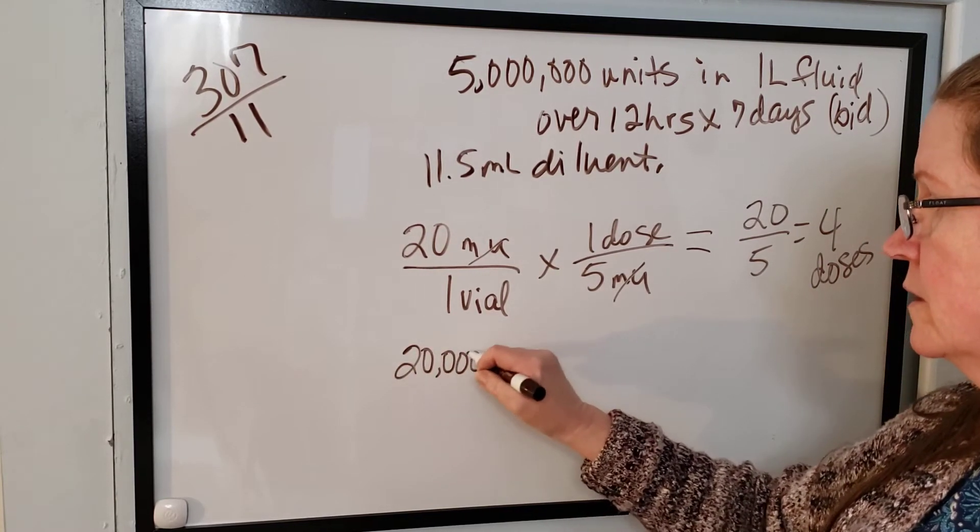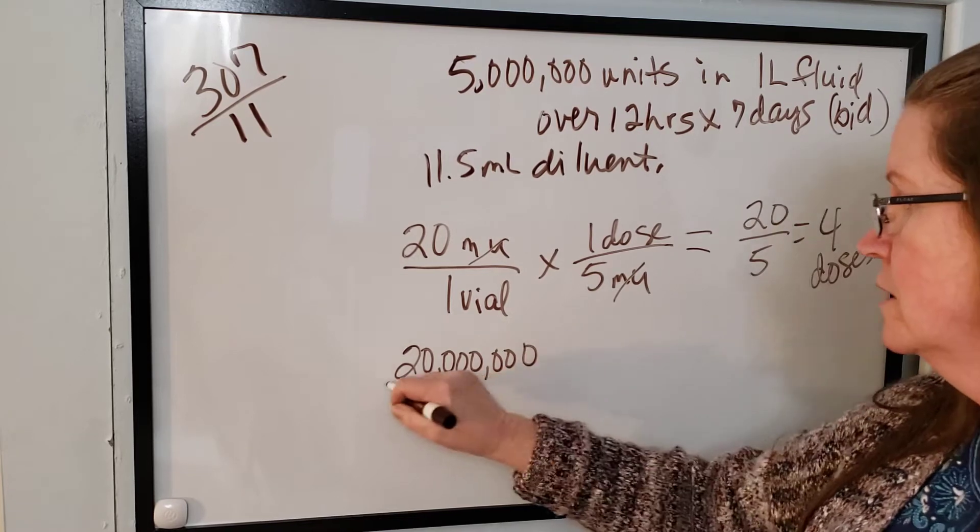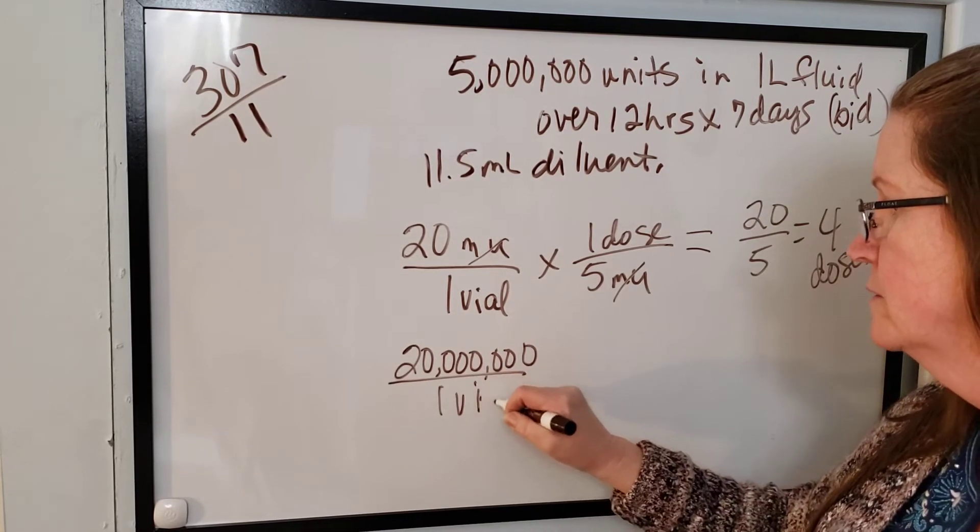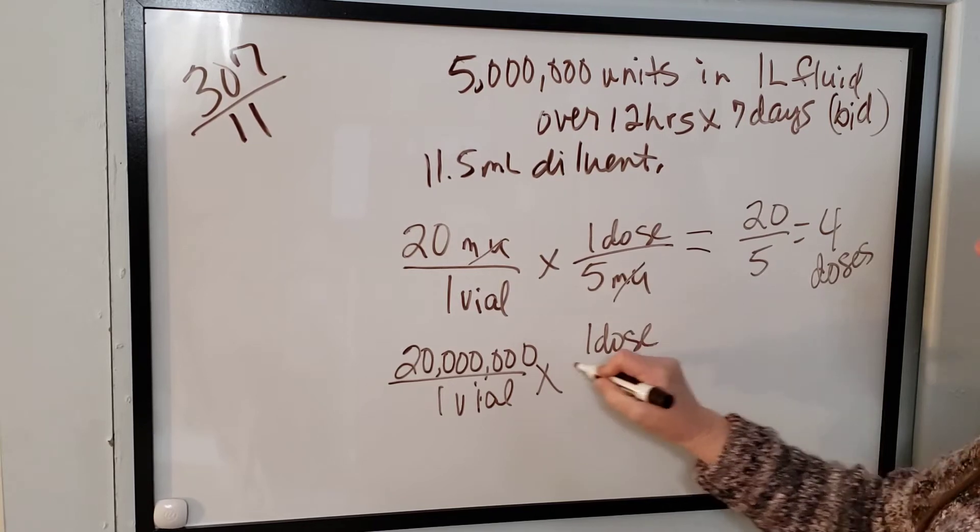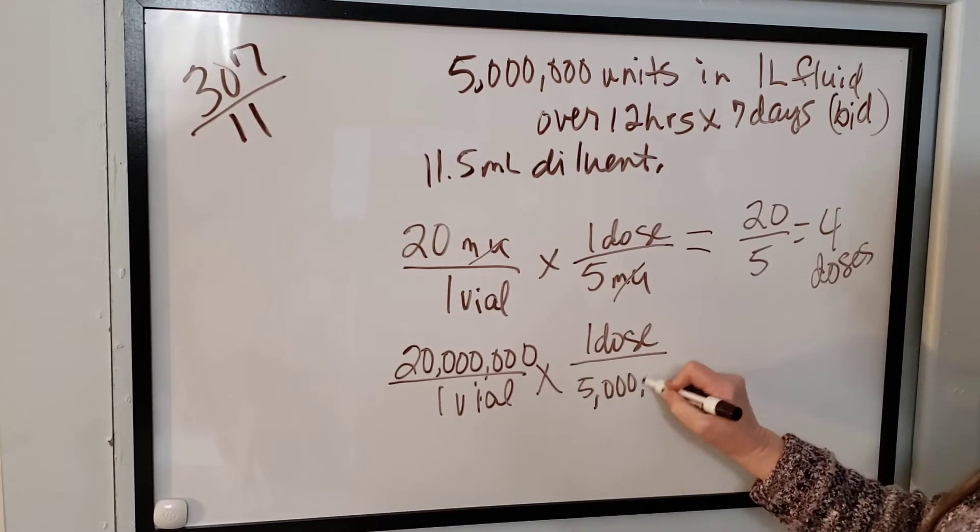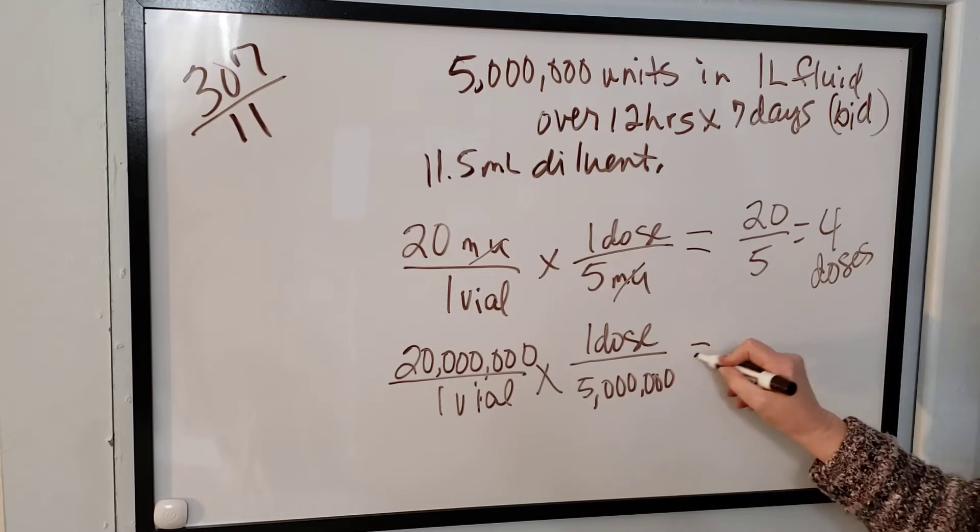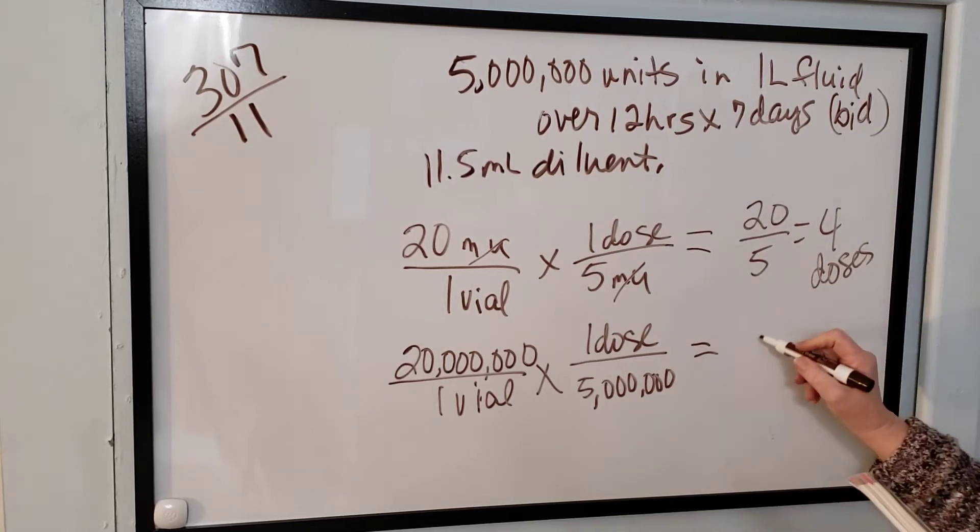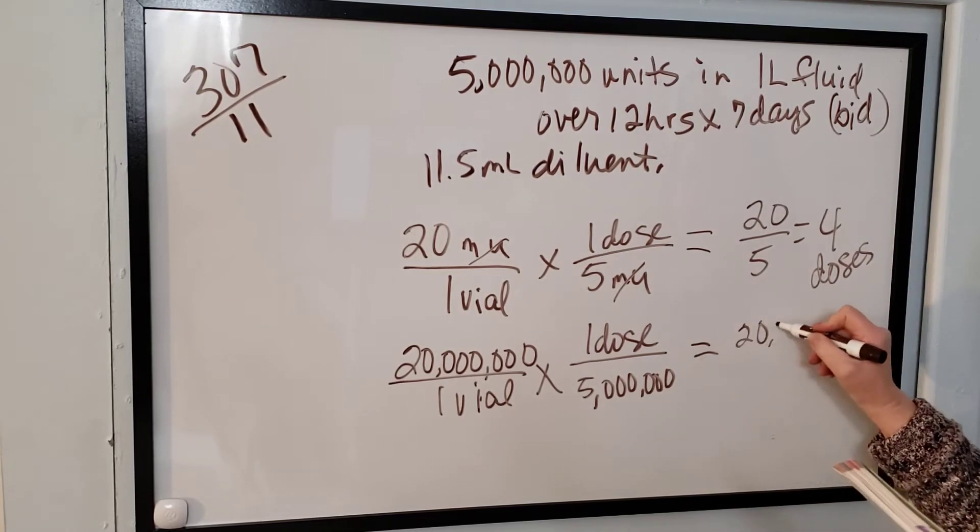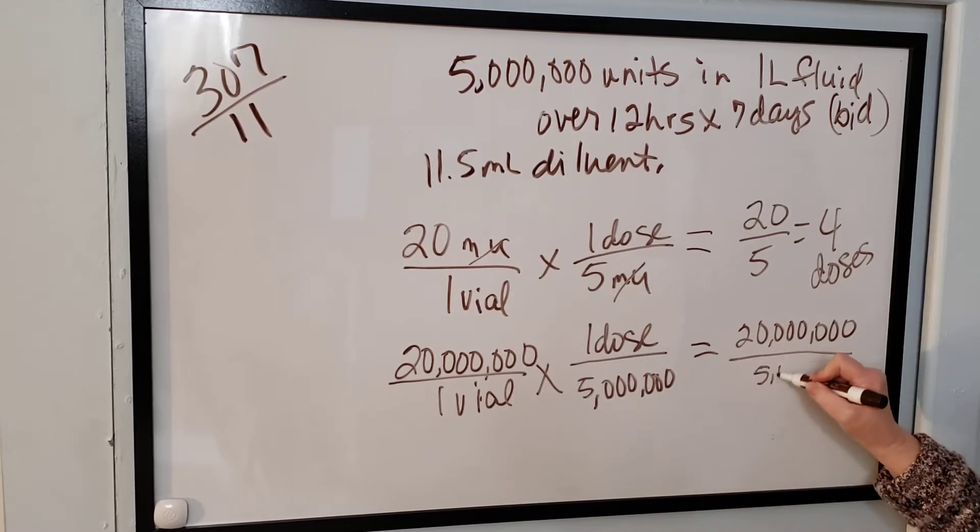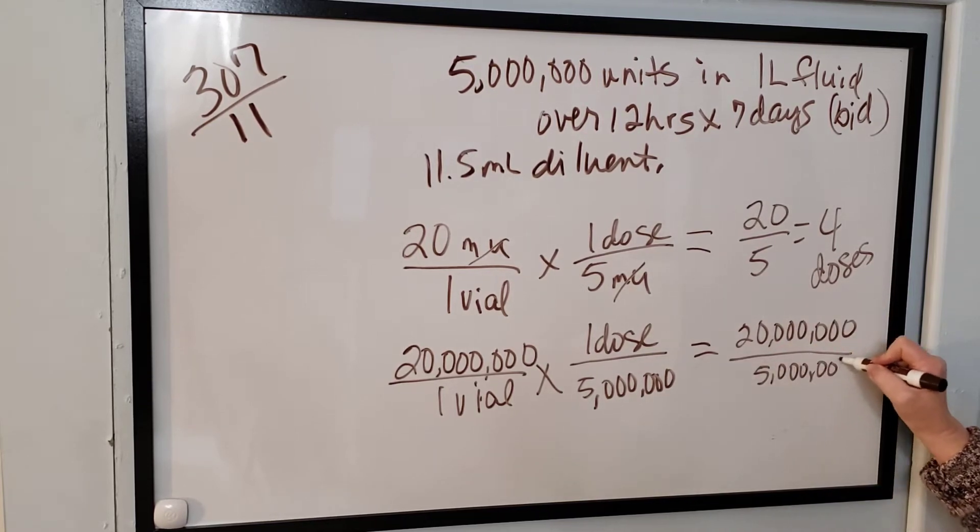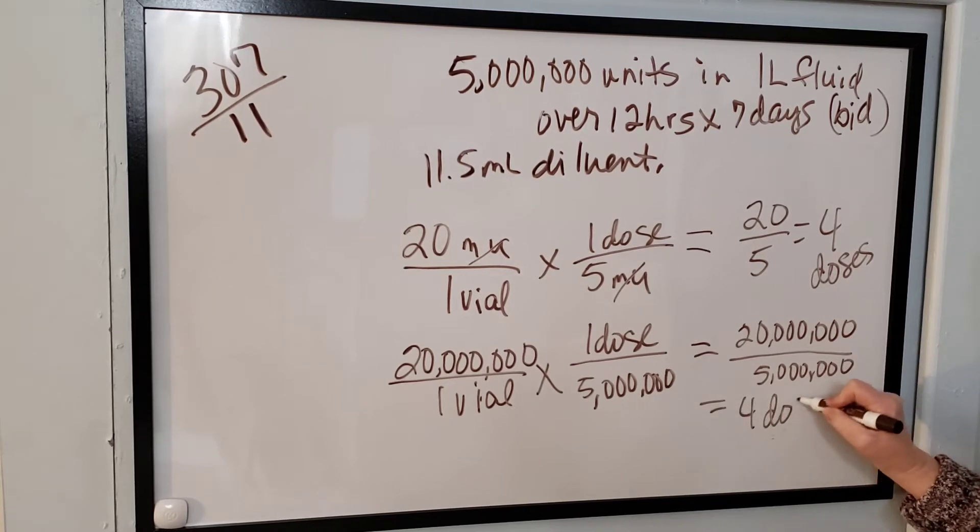Or you can do the math with all the zeros. 20 million in one vial. And one dose is 5 million. So this will give me doses per vial. And I have 20 million divided by 5 million. And it's still four doses.